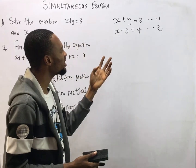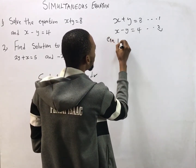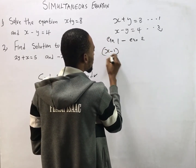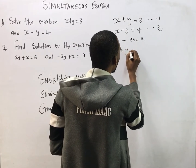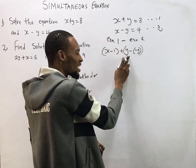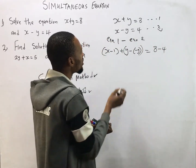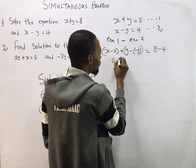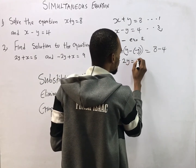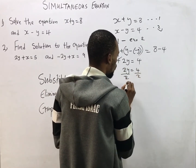I choose to eliminate S in this equation. If I'm doing that, I'll simply say equation 1 minus equation 2. This implies S minus S, then plus Y minus minus Y equals 8 minus 4. S minus S is 0, and Y minus minus Y — since minus times minus gives plus — becomes plus 2Y equals 4.